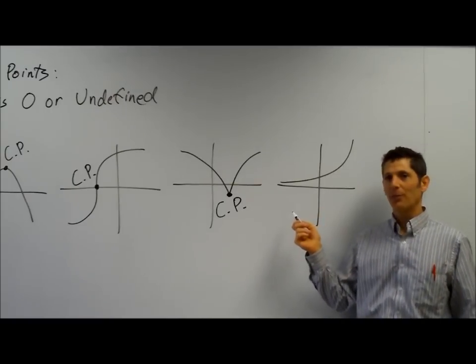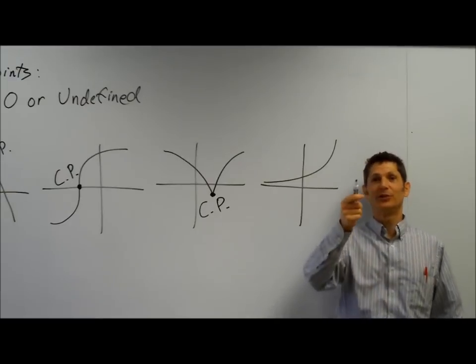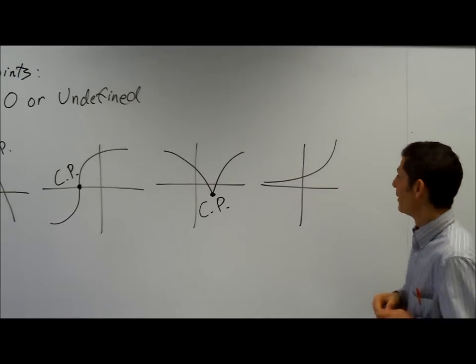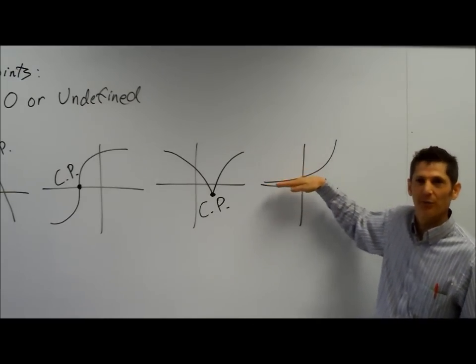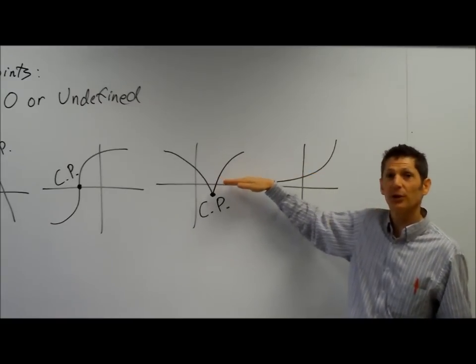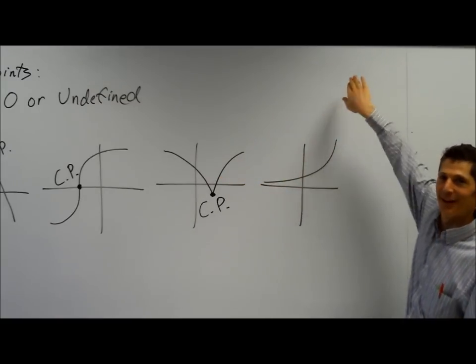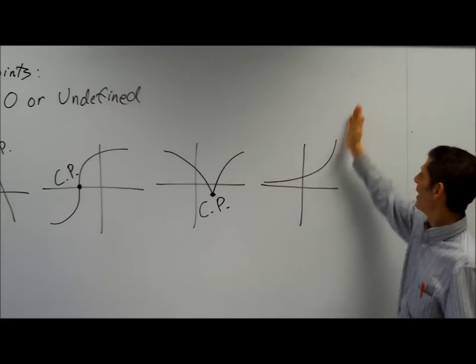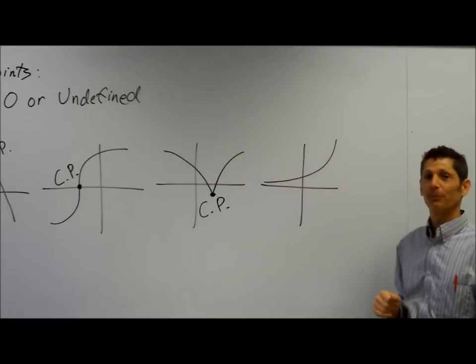Tricky one — how many critical points on this last one? Zero. Right, the function never quite — this is an asymptote. The slope never becomes zero, and never quite gets perfectly flat. So that's it. Those are critical points.